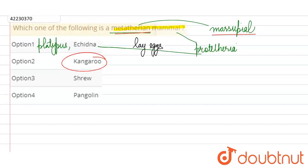The third group is Eutheria. We have placed the rest of the mammals in this group, which we call placental mammals. Examples include Shrew and Pangolin. These two are placental mammals or Eutheria.